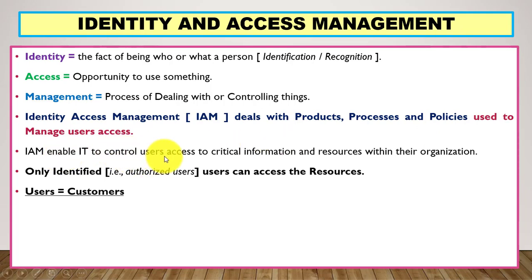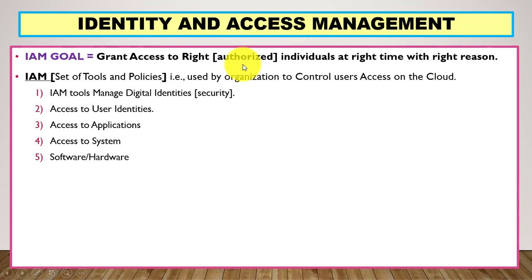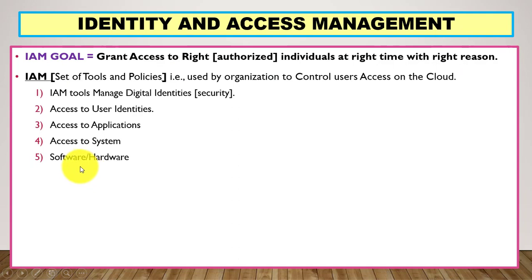Organizations use IAM tools to control user access to critical information and resources within their organization — only authorized users can access the resources. The goal of IAM is to grant access to the right individual, meaning the authorized user, at the right time and with the right reason. The goal on the cloud is that users can access the system and applications.